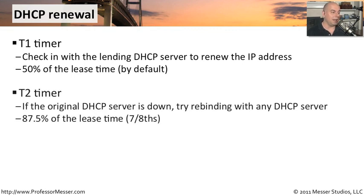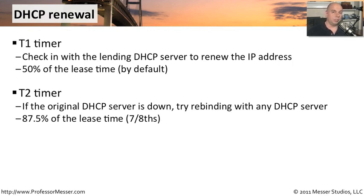There's a separate timer called the T2 timer, where at 7/8ths of the lease time, we're going to start checking in with anybody who might be able to provide us with a DHCP address. So if the original is down, just send out a request to anyone out there. If there's any other DHCP server available — I'm well past my T1 timer, I'm now 7/8ths into my lease — I'm going to need to get an IP address from someone else and give up on that first device.